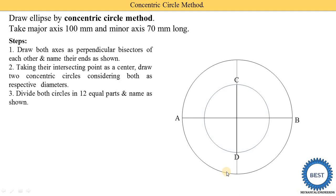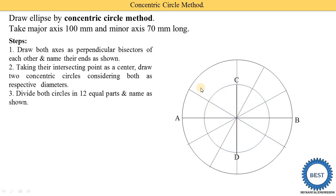The second method uses angles: since each quadrant is 90 degrees, place lines at 30 degrees and 60 degrees within each quadrant to achieve 12 equal divisions. After dividing, draw lines connecting each outer circle point to the center. Label all 12 equal parts: one, two, three, four, five, six, seven, eight, nine, ten, eleven, and twelve.